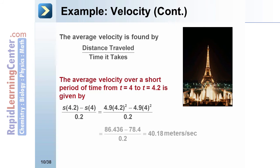So plugging those numbers into the formula is going to give us 86.436 minus 78.4, divided by 0.2. This yields 40.18 meters per second as the average velocity.